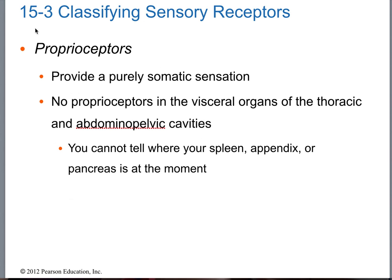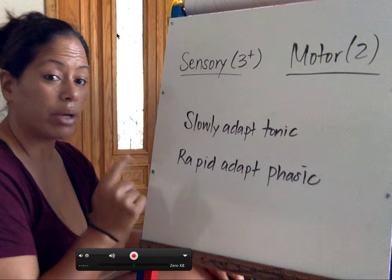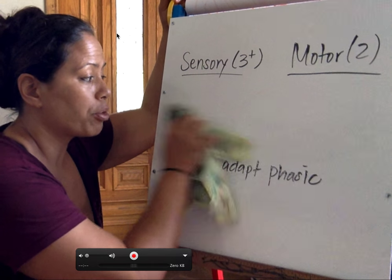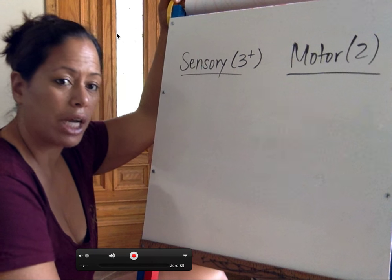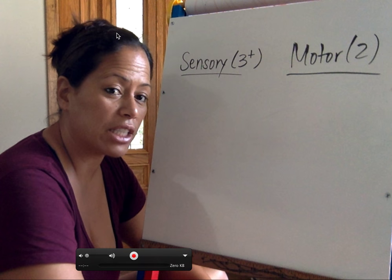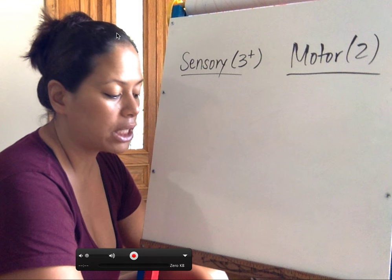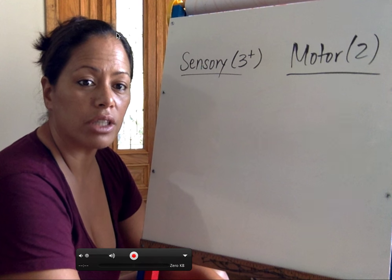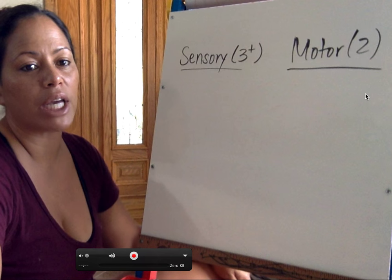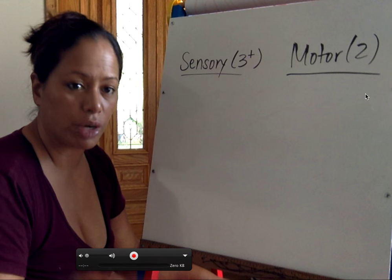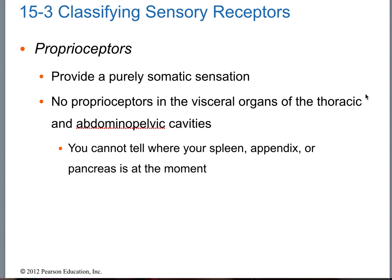Proprioceptors monitor muscle function. There are two types: muscle spindle fibers and Golgi tendon organs. The muscle spindle detects stretching; the Golgi tendon organ detects tension in the tendon. Remember: stretching for the muscle spindle, tension in the tendon for Golgi — and you should be fine.